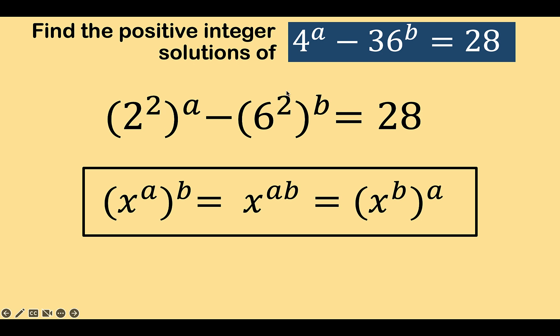The reason is we notice that there is an exponent 2 here, there is an exponent 2 here, and there is a minus sign. So we know that we can turn this into a difference of 2 squares.